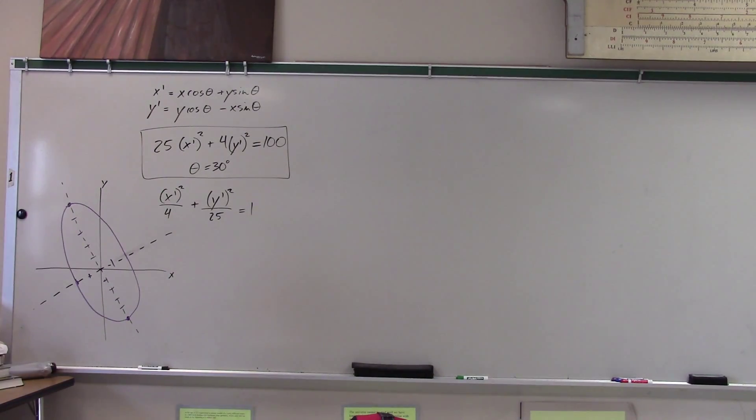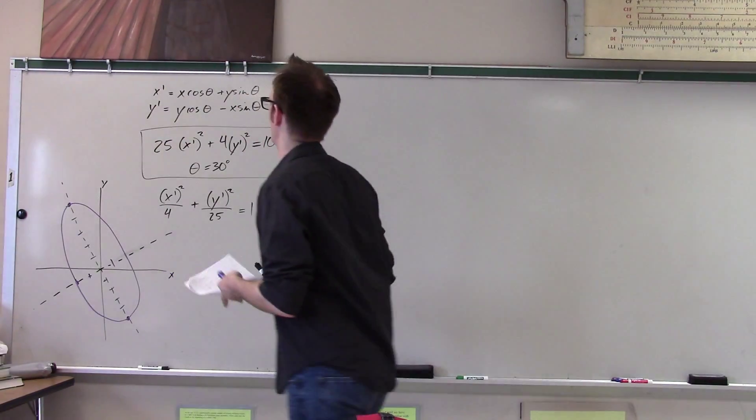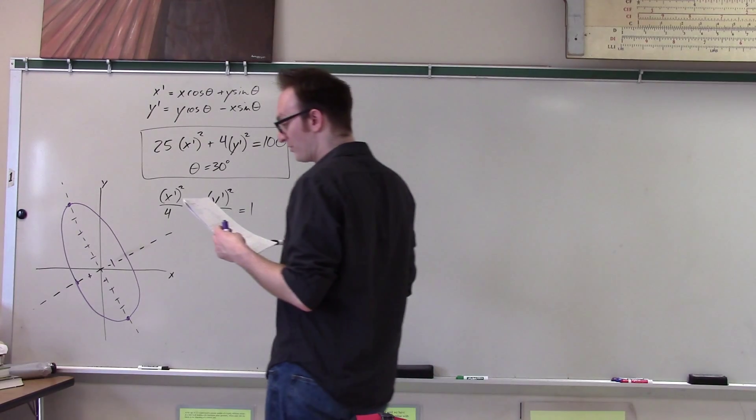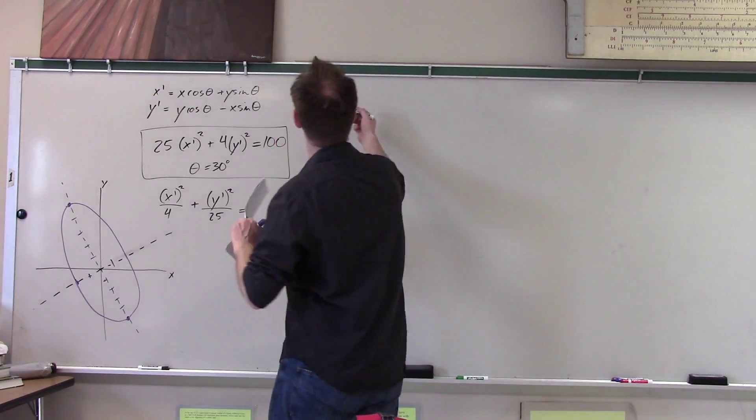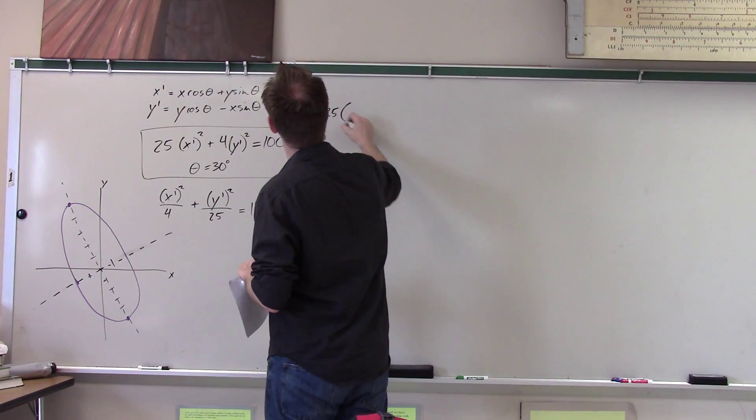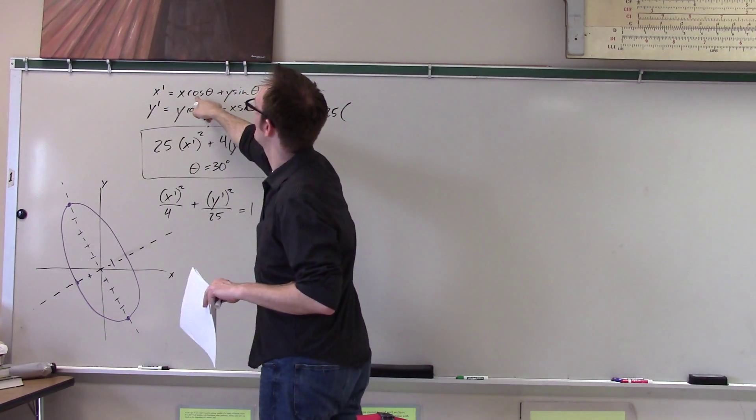And what I want is the normal equation of that ellipse. Well, I simply use these formulas, right? Okay, so these formulas tell me everything I need to know. So let's do it. This is 25. What is x prime? Well, x prime is that.